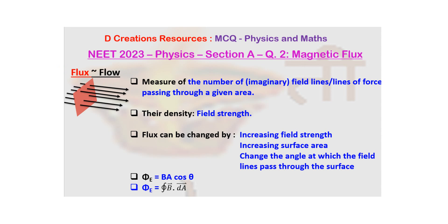And if the density is low, that means the field is weak. Now, if you want to change the flux, you can change it in different ways. First is you can increase the field strength. And second way is you can increase the surface area. And the third way is you can change the angle at which the field lines are passing through the surface.